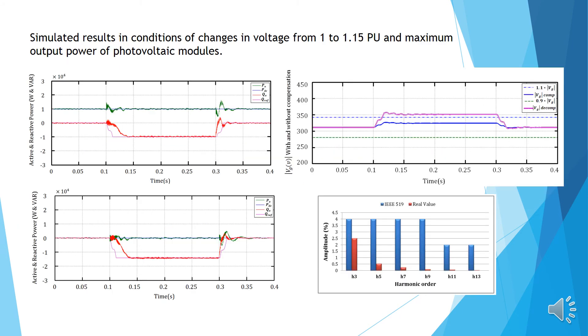In conditional voltage change from 1 to 1.15 per unit and maximum output power of the photovoltaic module, inverter has absorbed 10 kW reactive power. In the down figure, active power is zero and the inverter can offer all its capacity to absorb reactive power while it compensates the voltage of the grid as shown in top figure on the right. In this case, the THD is 1.8%.